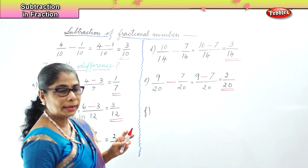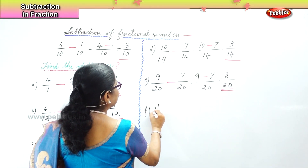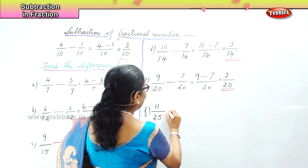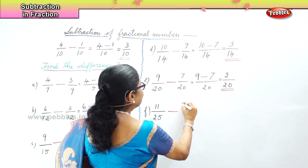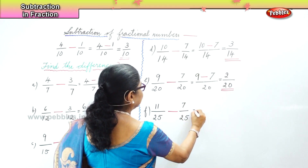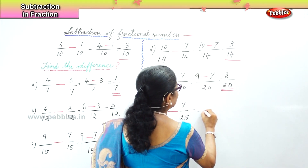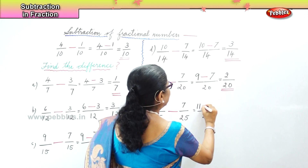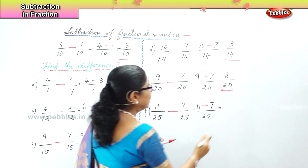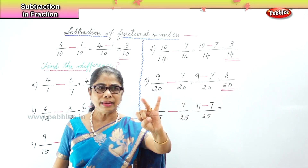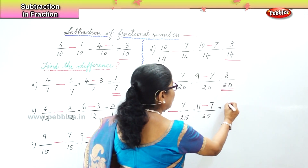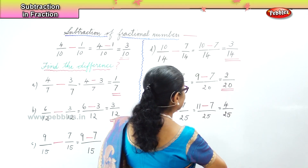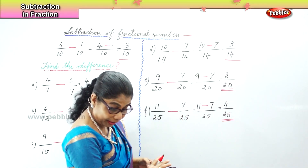Next, let's do another sum. We have 11 by 25 minus 7 by 25. The denominator is common — that is 25 — the same for both. The sum we have here is 11 minus 7. What is 11 minus 7? After 7: 8, 9, 10, 11 — just 4. So we have 4 as the numerator, the denominator is the same — 25 — our answer is 4 by 25.